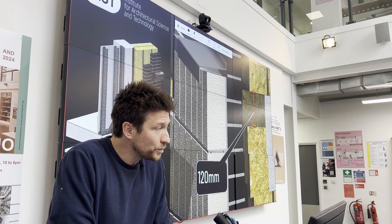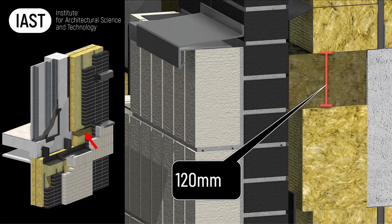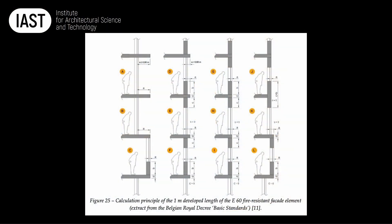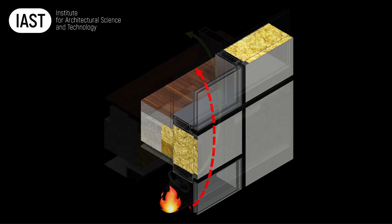A minimum 150mm dimension is required from the anchor to the bottom of the slab. You also have to position your cavity closer in that zone. In most countries, the minimum size of the spandrel zone is mandated by the building regulations. It acts as an obstacle for flames to leapfrog from one floor to another.